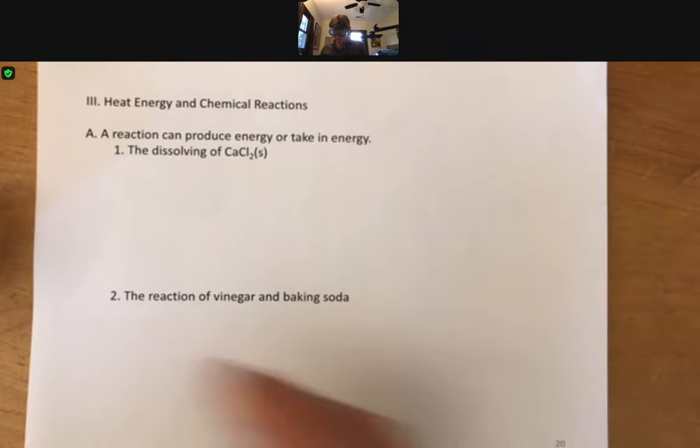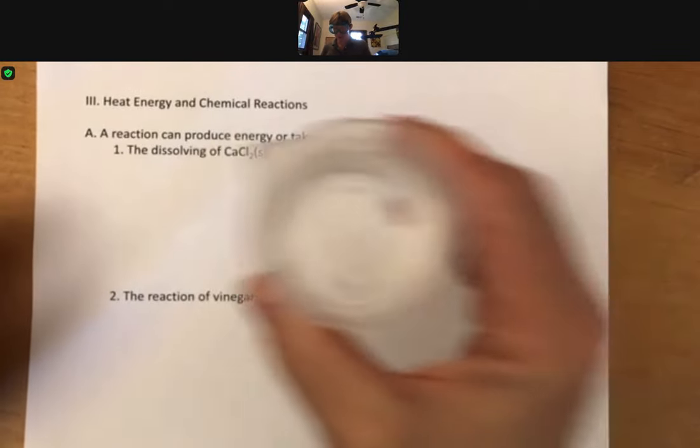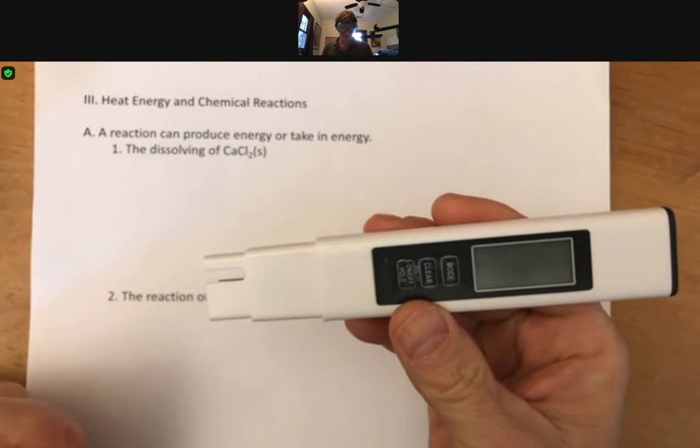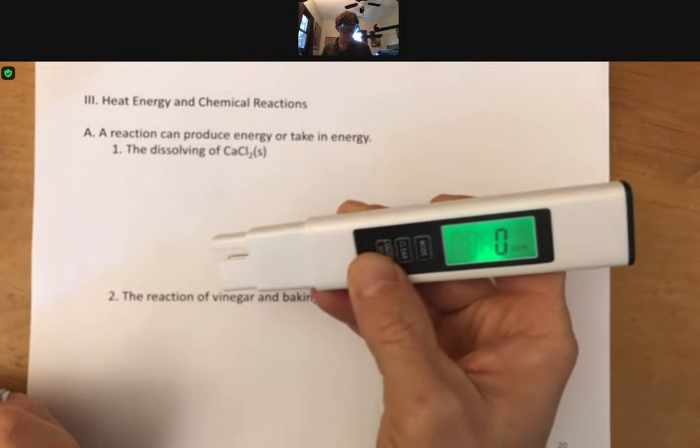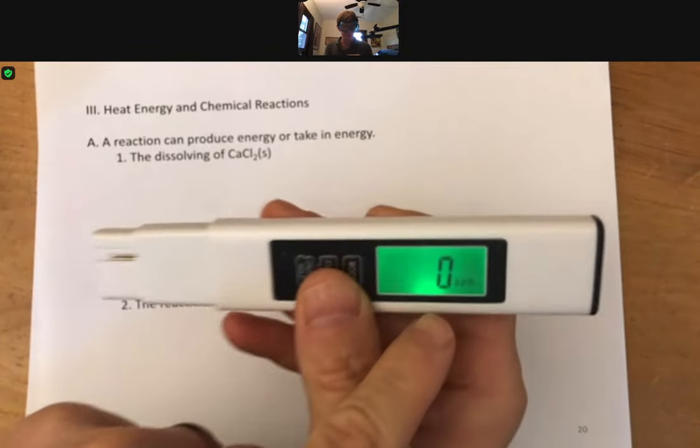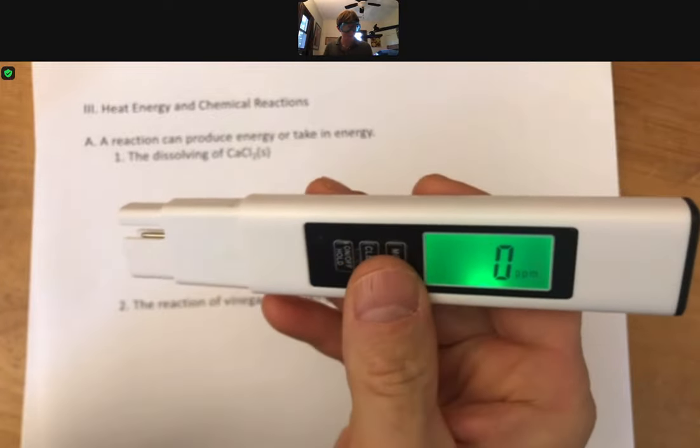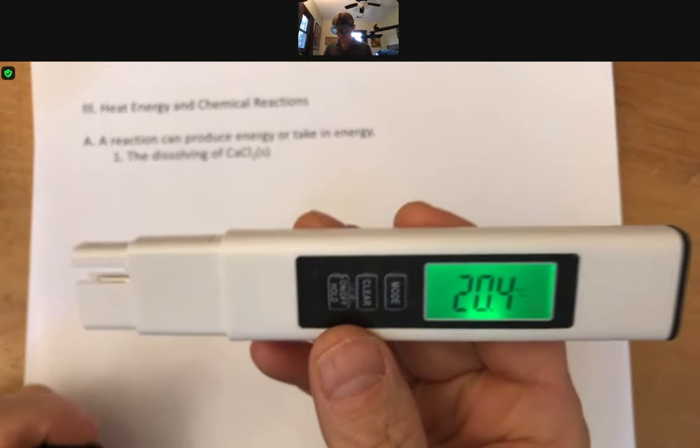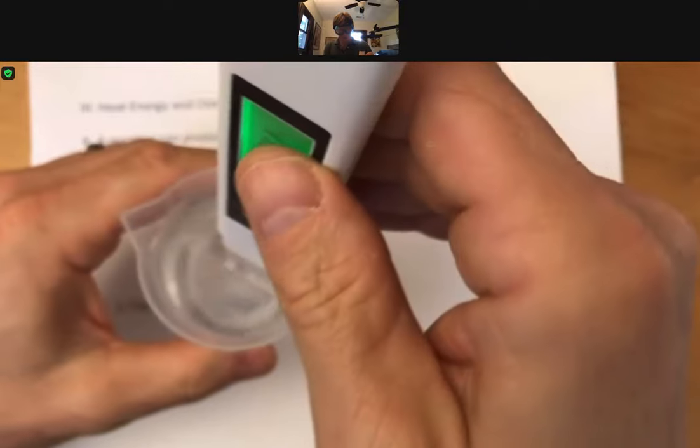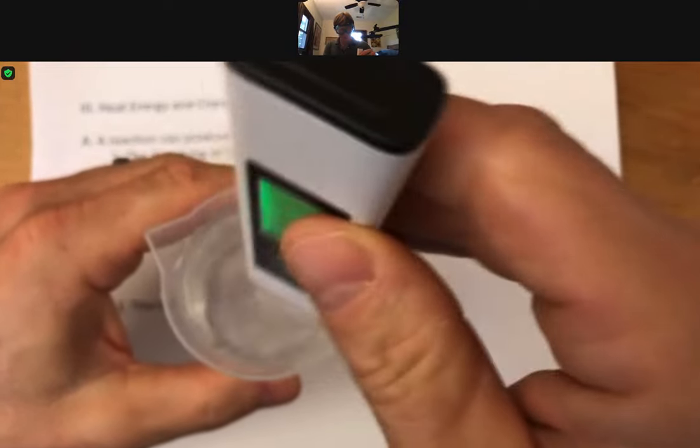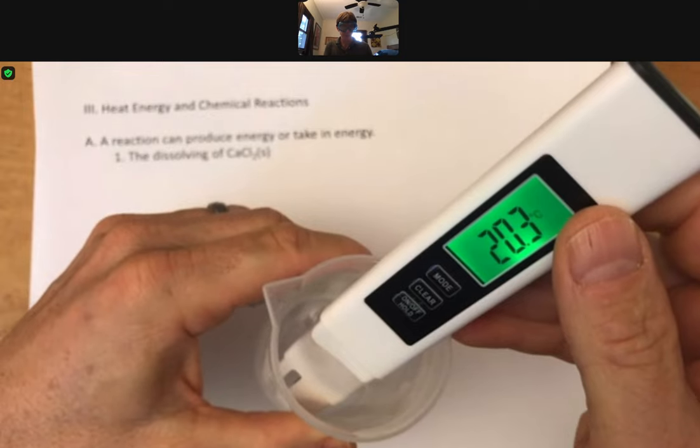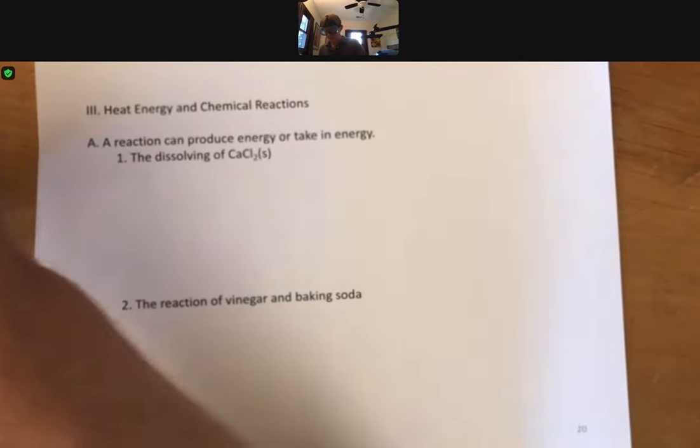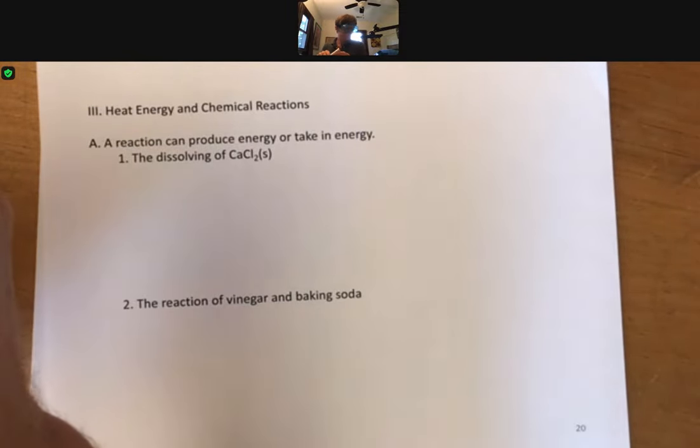I've got some water, about 75 milliliters here, and I've got a temperature tester. It actually measures parts per million for water hardness testing, but if I press mode twice, I get temperature in degrees Celsius. If I put that into my water, I can see that my water is pretty much room temperature, 20.3, somewhere around there.